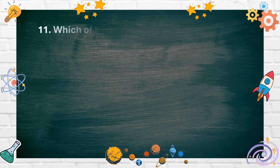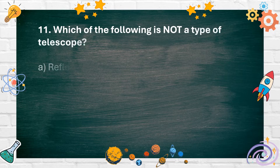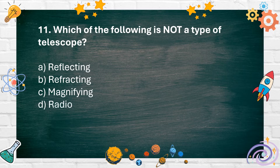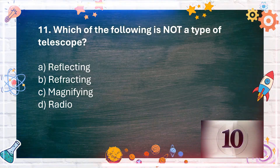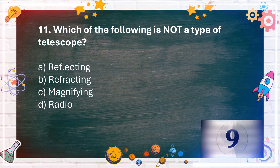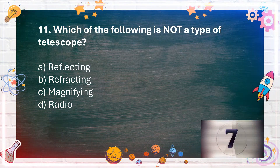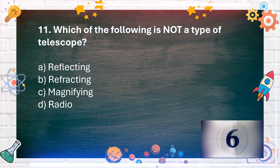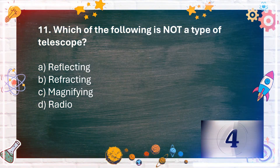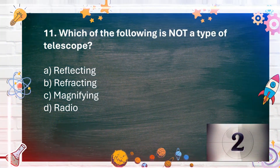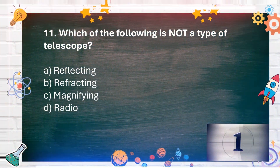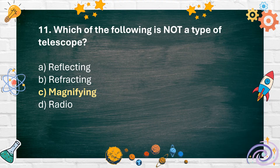Number 11. Which of the following is not a type of telescope? A. Reflecting. B. Refracting. C. Magnifying. D. Radio. The answer is C. Magnifying.